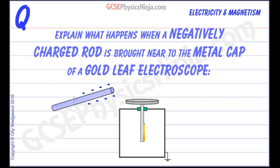So what happens when we bring, for example, a polythene rod that's been rubbed with some wool? That will have a negative charge as friction has transferred electrons onto the rod. What happens when we bring that rod close to the cap of the electroscope?